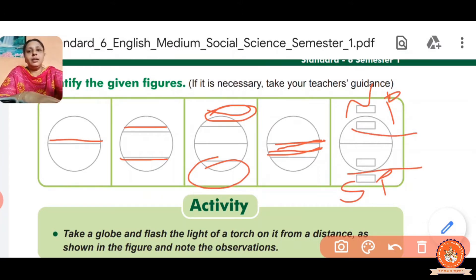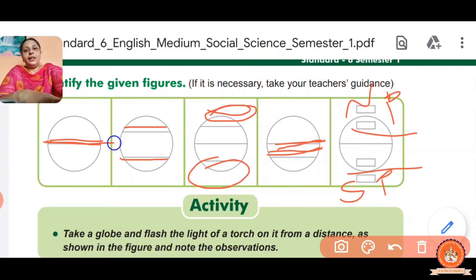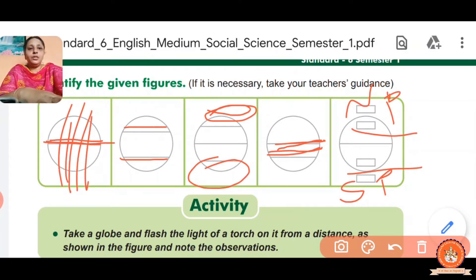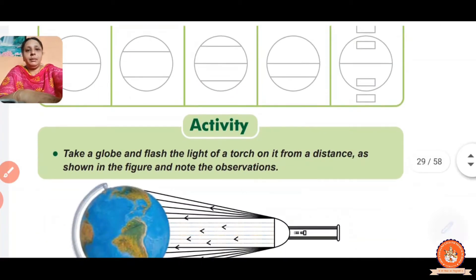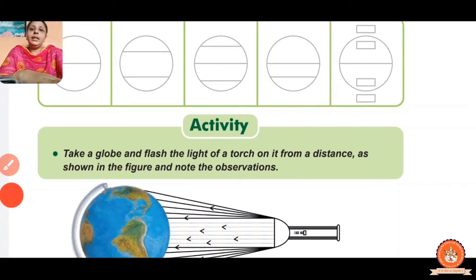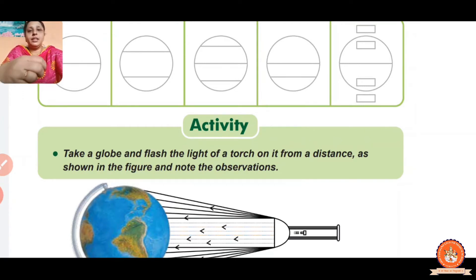These zones are divided based on latitude lines, which are imaginary lines. The longitude lines are also imaginary lines. I will show you each and everything by this globe.